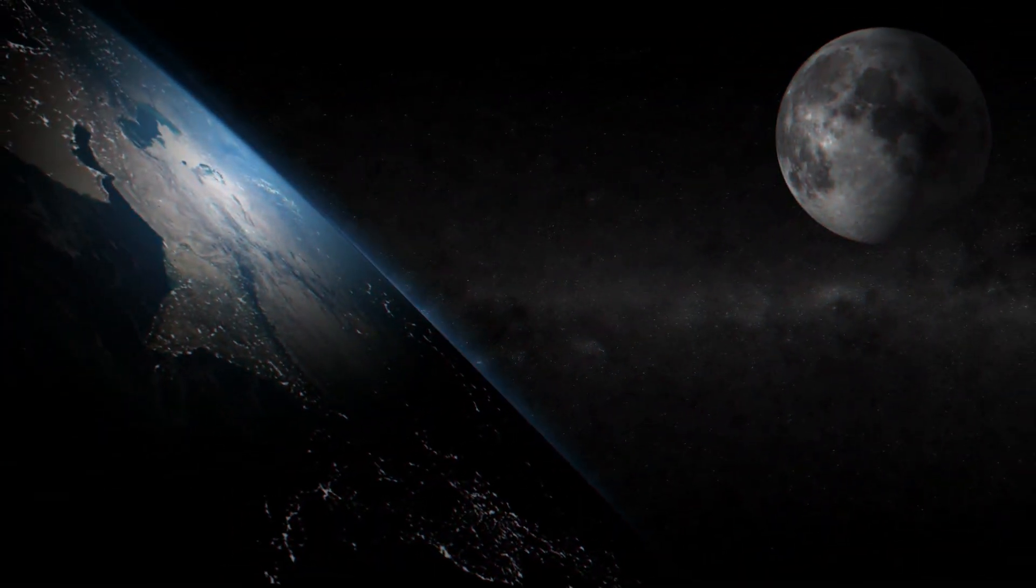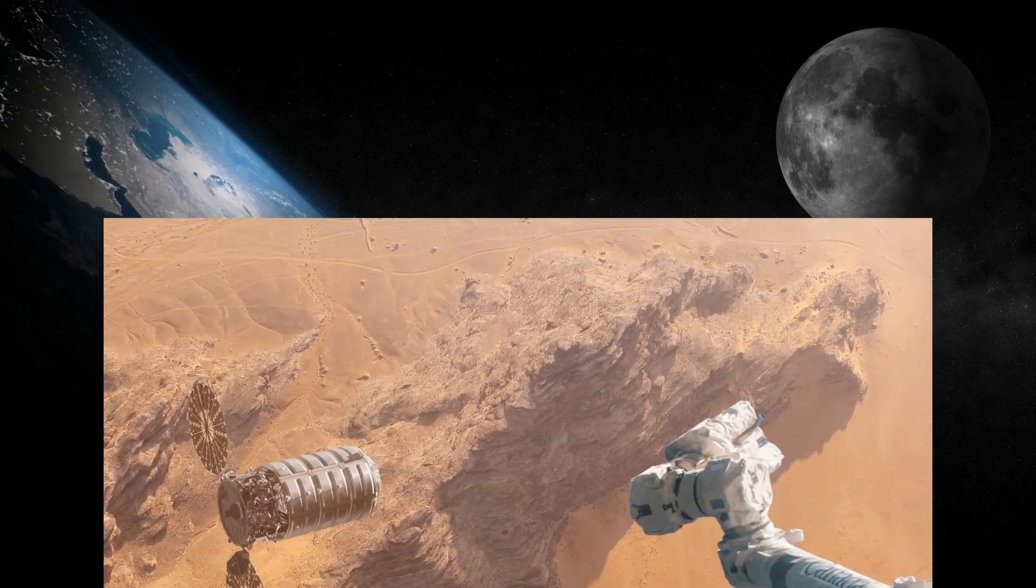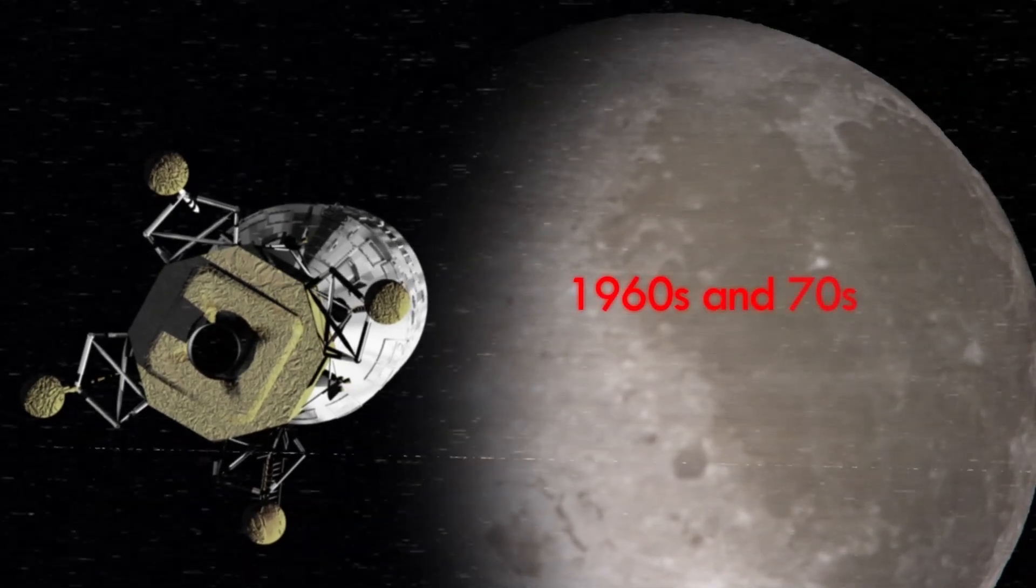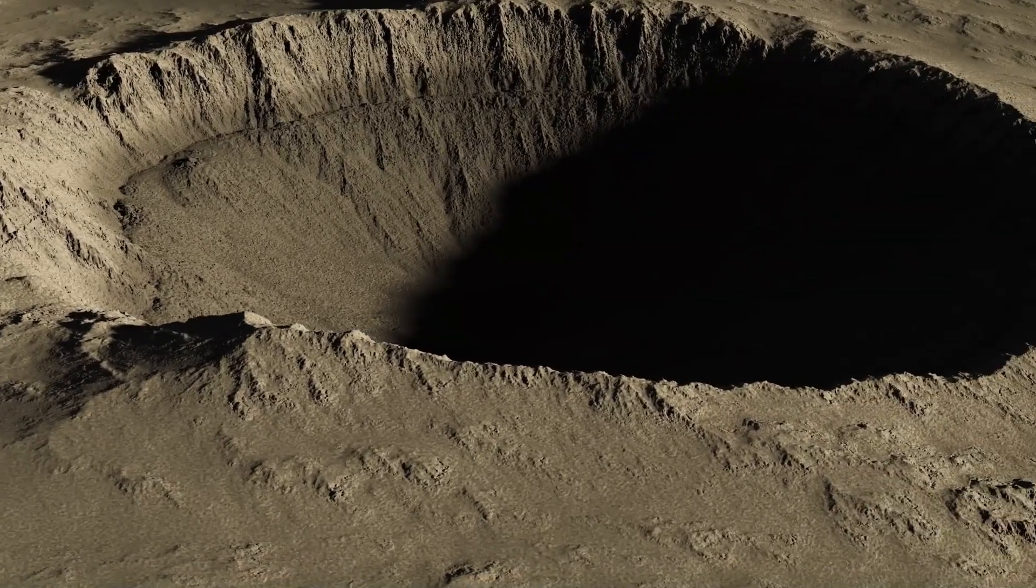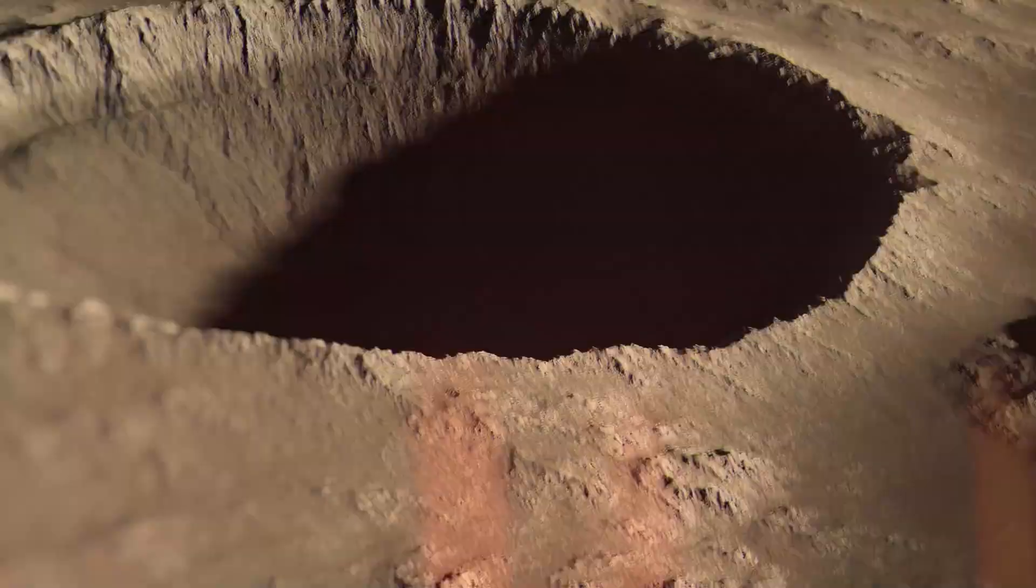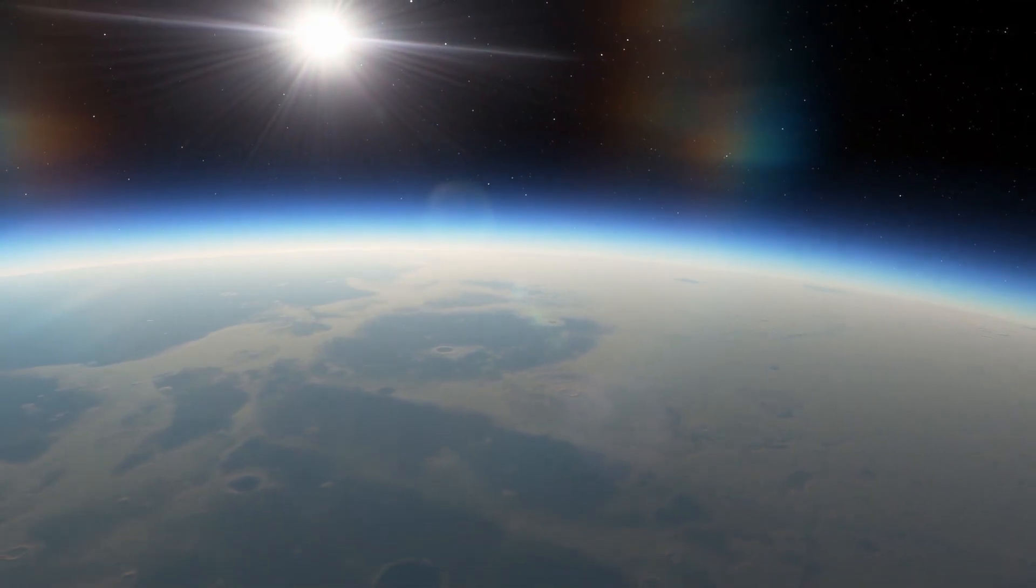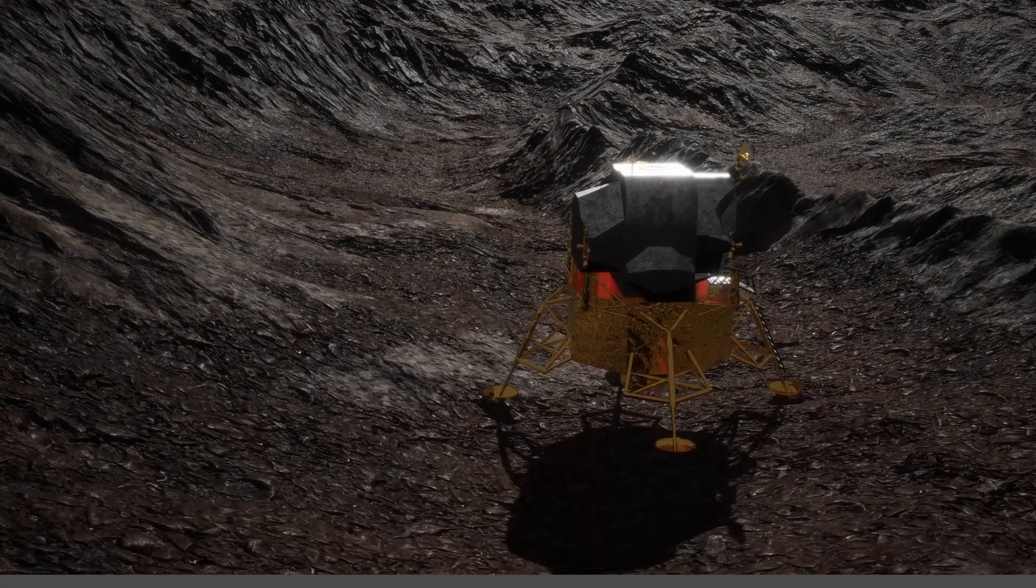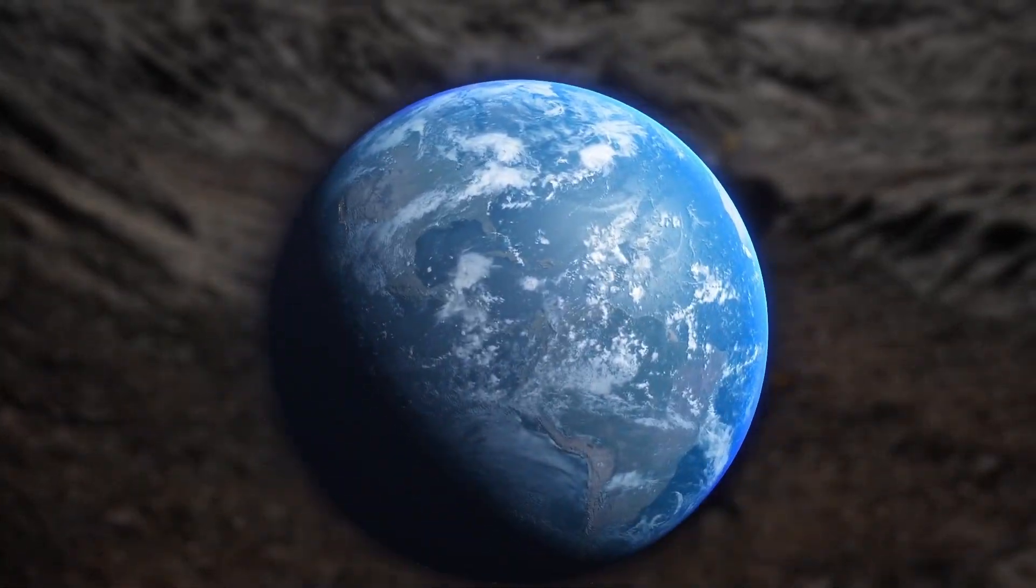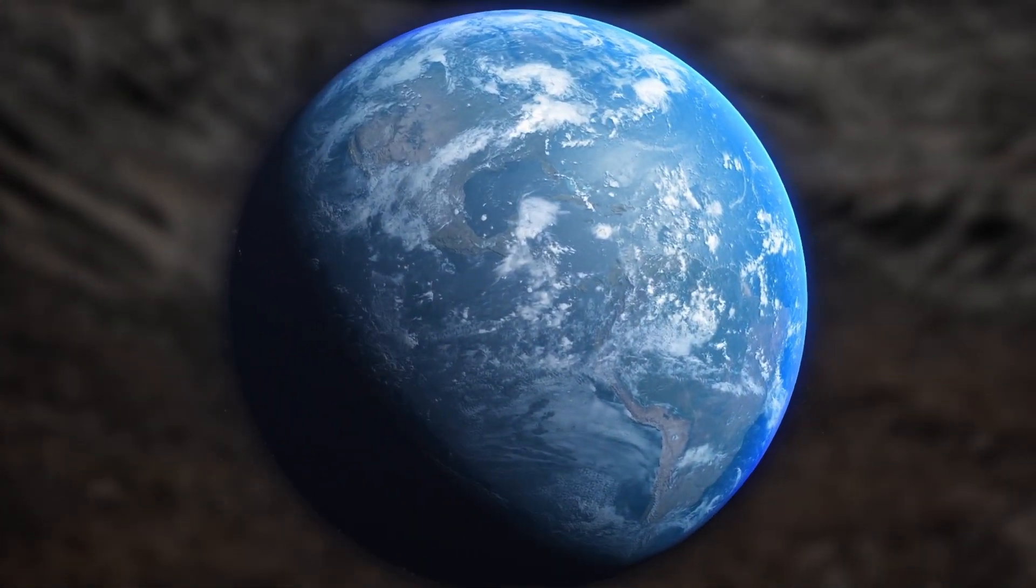Despite these advantages, scientists remain more inclined towards Mars for colonization. The Apollo missions of the 1960s and 70s brought back around 840 piles of Moon rock and soil, revealing geological similarities to Earth. This indicated that the Moon may have formed from a fragment of Earth following a tremendous cosmic impact.